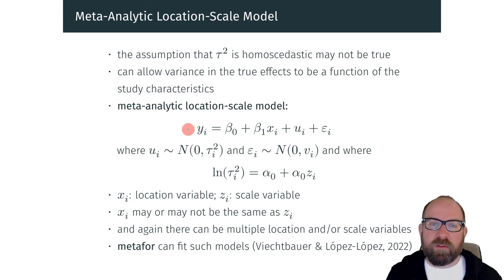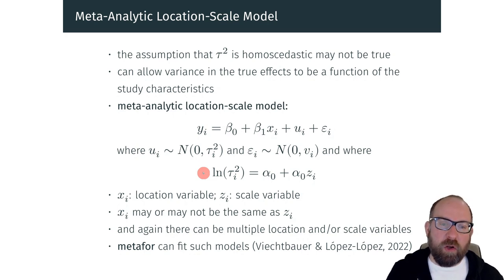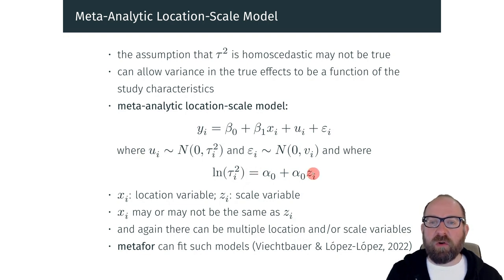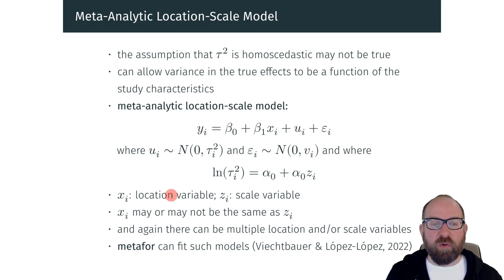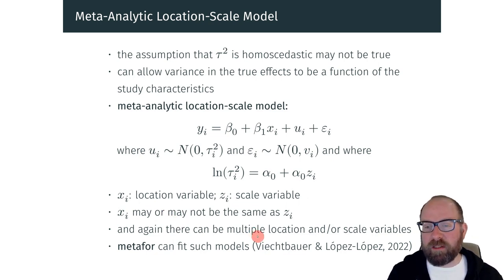The first part of the location scale model looks pretty much like a standard meta-regression model, but the difference is that tau squared now has a subscript i, so tau squared is allowed to differ across studies. What we have now is a model for how tau squared — or log transformed tau squared — differs across studies as a function of one or multiple study characteristics. We can now make a distinction between predictors for the size of the effect, these are so-called location variables, and predictors for the amount of heterogeneity, these are so-called scale variables, and they may or may not be the same. You can also have multiple location and/or scale variables.